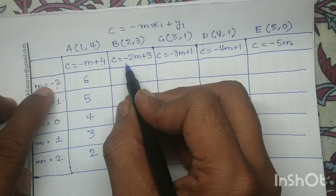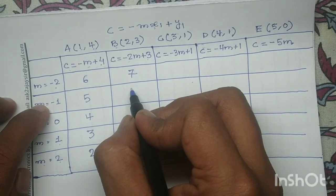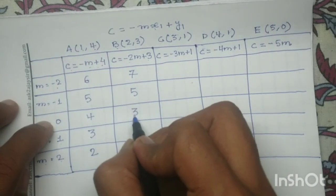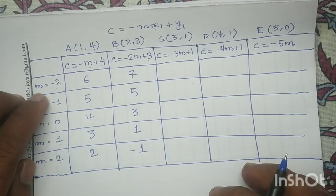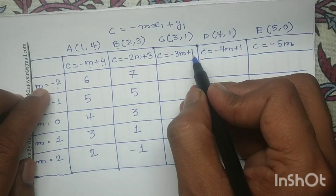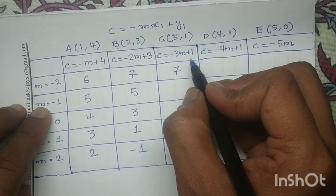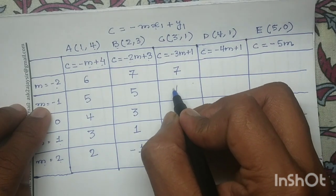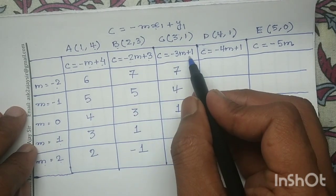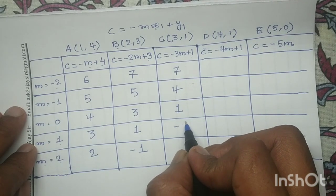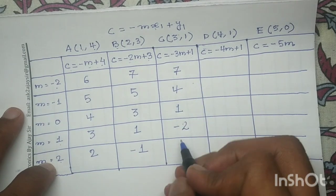Similarly, in the third column, the equation is −3m + 1. Substituting m=−2 gives 7; m=−1 gives 4; m=0 gives 1; m=1 gives −2; and m=2 gives −5.